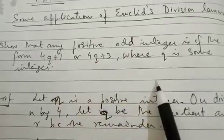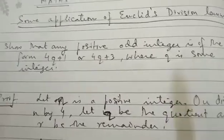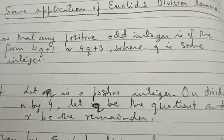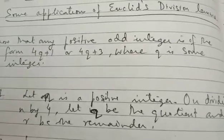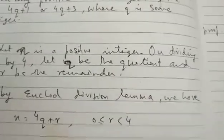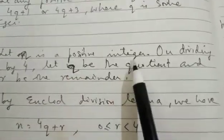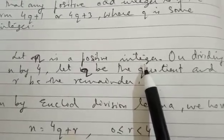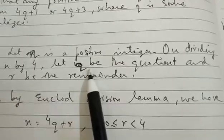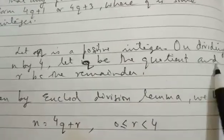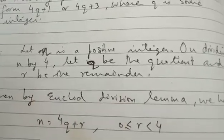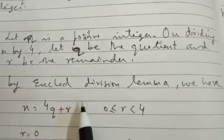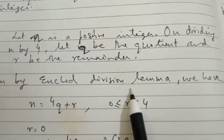Now let me take the first example. The first example is: show that any positive odd integer is of the form 4q plus 1 or 4q plus 3, where q is some integer. Now how are we going to proceed in the solution? Let N be a positive integer — please remember it is a positive integer — on dividing N by 4.